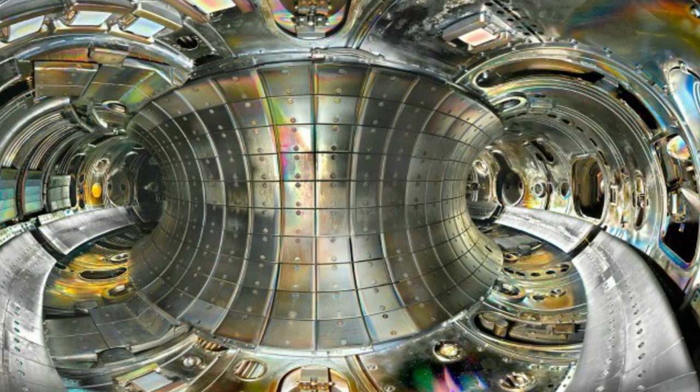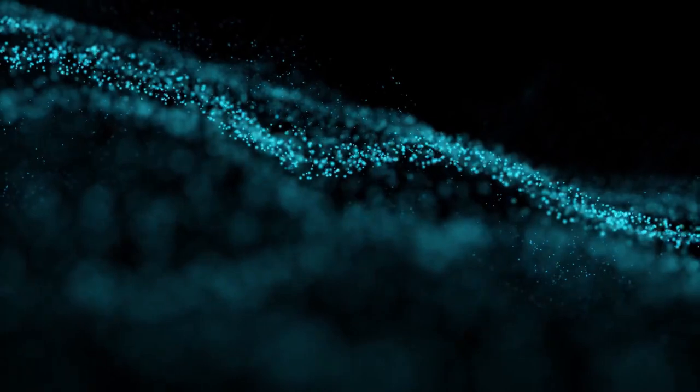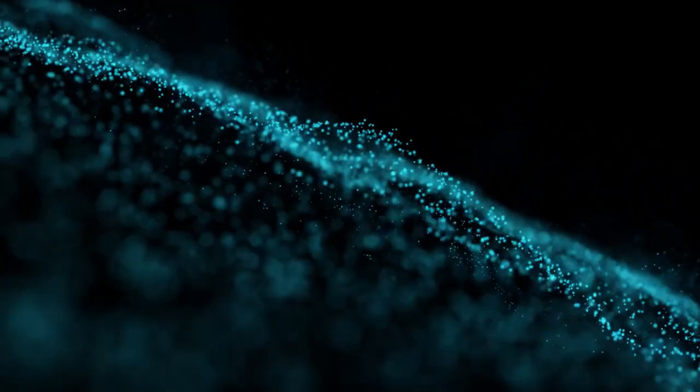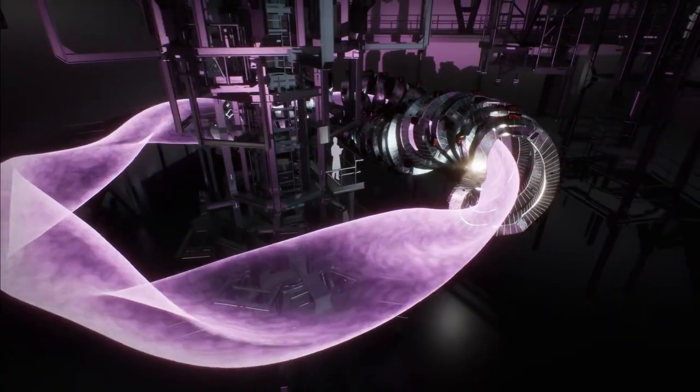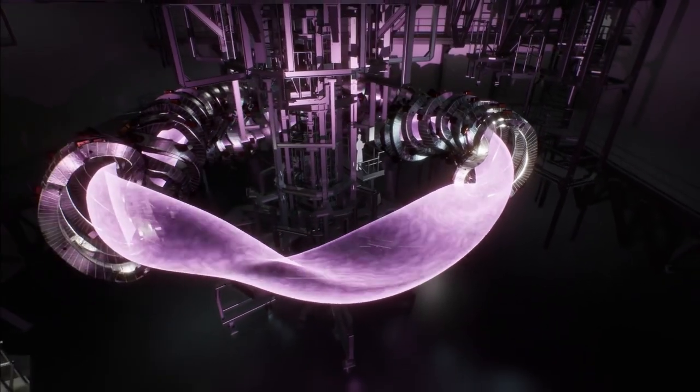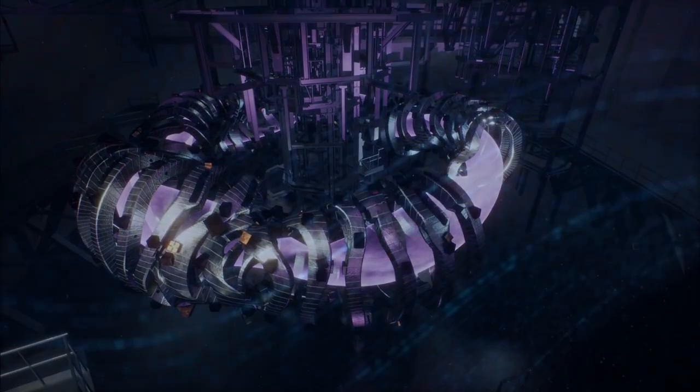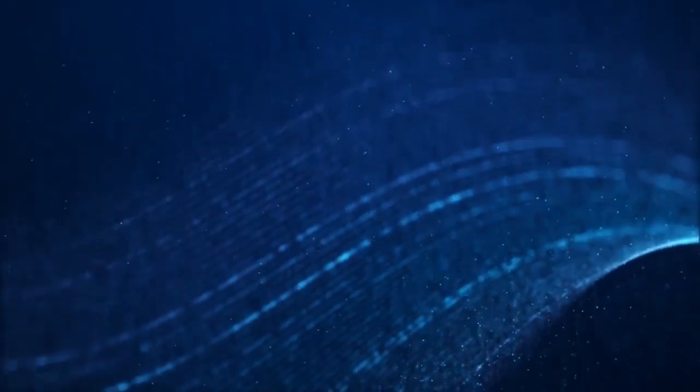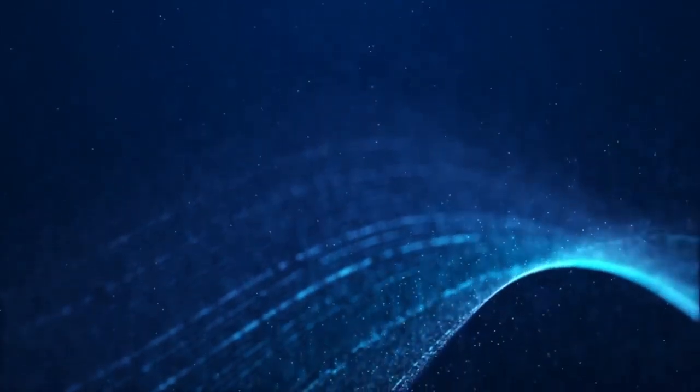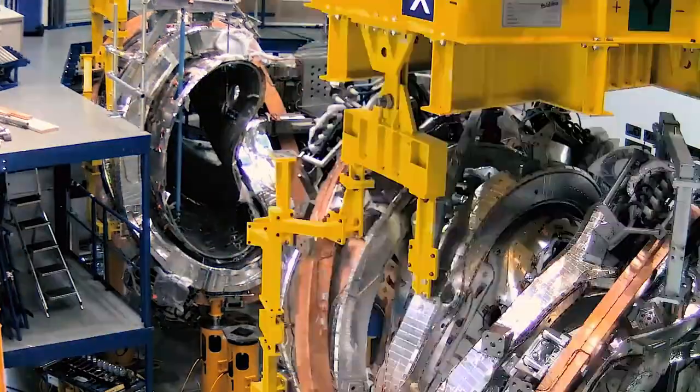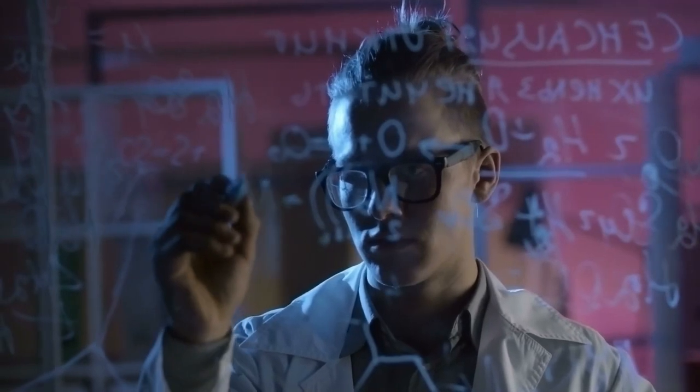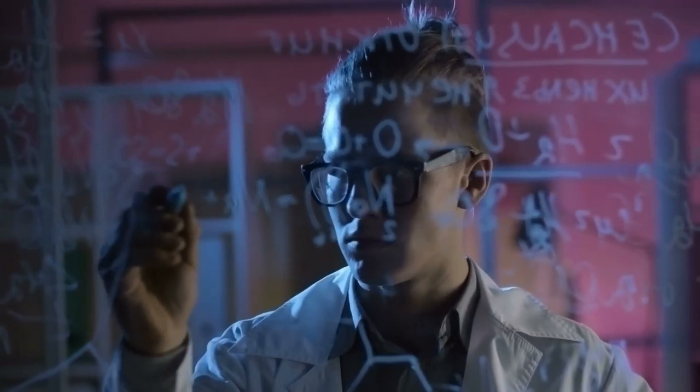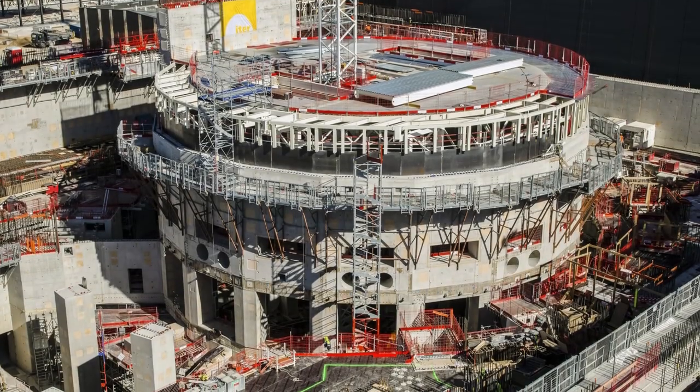This is partially due to the symmetry of a tokamak, which enables particles to travel along smoother paths. Due to the numerous wiggles and ripples that stellarators experience, it is usual for significant quantities of particles to be lost. As a result, the vast majority of fusion investigations conducted since the 1970s have led to the enormous ITER reactor project.